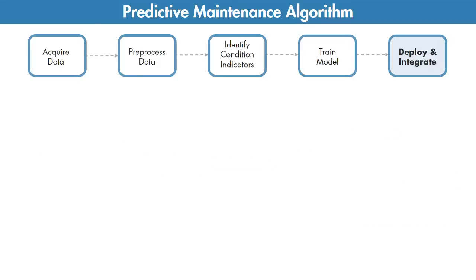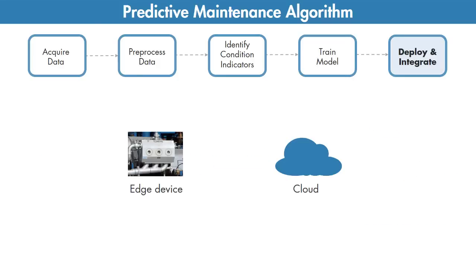After developing your algorithm, you can get it up and running by deploying it on the cloud or on your edge device. Alternatively, if you have a large amount of data and if there are limits on how much data you can transmit, you can perform the preprocessing and feature extraction steps on your edge device and then send only the extracted features to your prediction model that runs on the cloud.